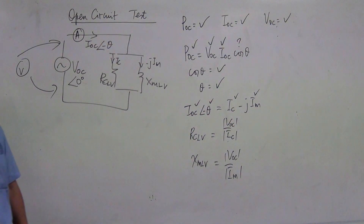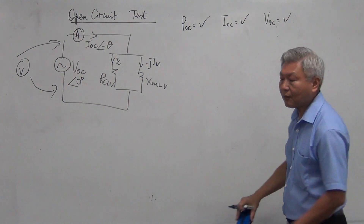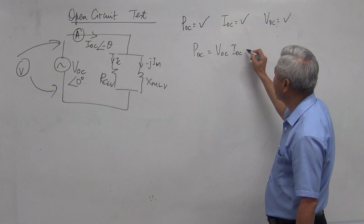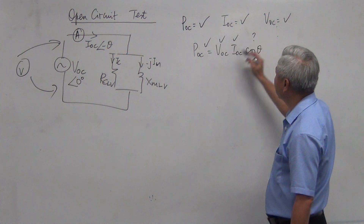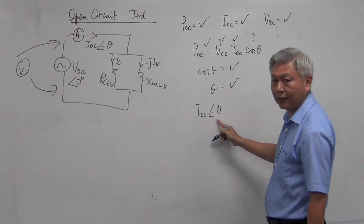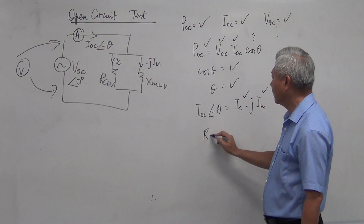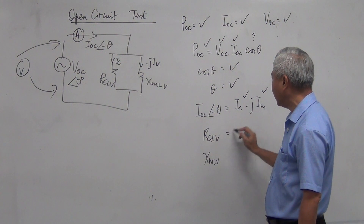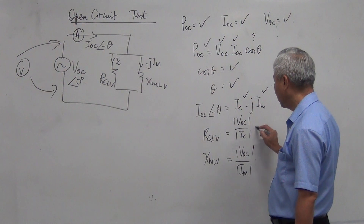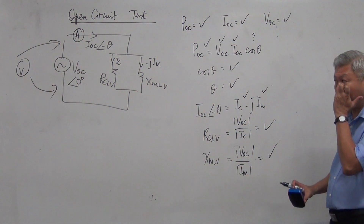Let's repeat it one more time — it's very mechanical and systematic. Wattmeter reading, ammeter reading, voltmeter reading. First step: use P equal to VI cosine theta, and find cosine theta. Find the inverse to get theta. Substitute theta into the ammeter reading with a minus sign. Convert polar form into rectangular form. Use Ohm's law: RC equals VOC divided by IC, and XM equals VOC divided by IM. The answer will come out — and these values are usually large numbers because they are parallel parameters.